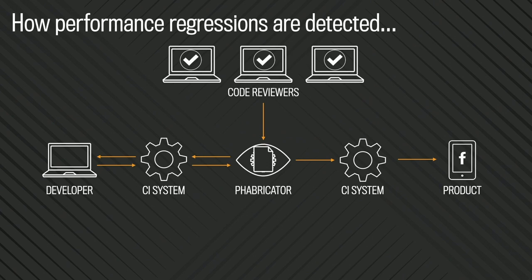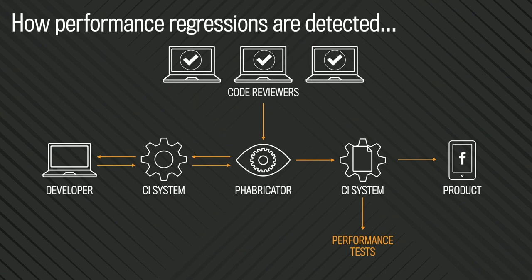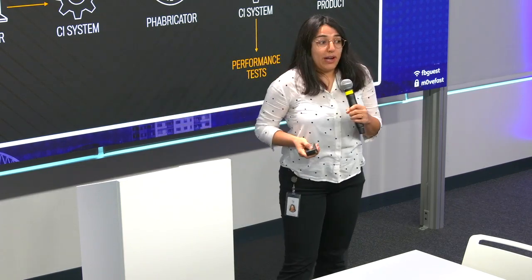And then once they say that looks good, the code would go to another CI system where there will be several sets of tests. And in particular, in our case, there will be some performance tests. But then, of course, you're running it and there are lots of commits, so you can't run all the performance tests, right? You will run some of them, and you might not run the one that will detect the regression. So we might not find the regression at this point, but then it goes on and it lands in the product.